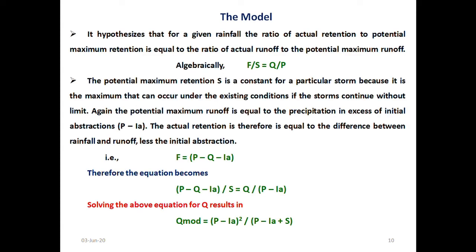Estimation of surface runoff is like this: F by S is equal to Q by P, where F by S is the actual retention by potential maximum retention and Q by P is actual runoff by potential maximum runoff. From this we will estimate the Q model which is (P minus Ia) squared by (P minus Ia plus S). Like this we will solve the results for the Q.